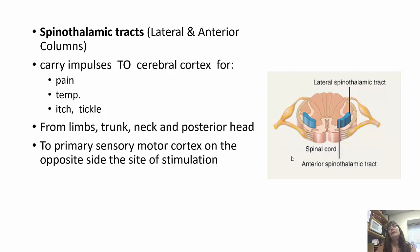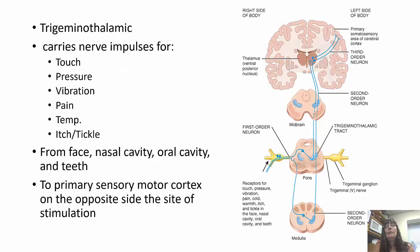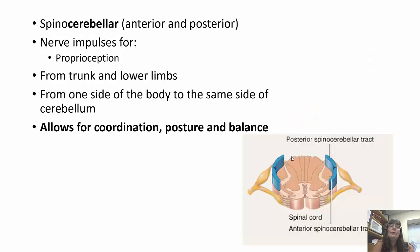Remember: left side controls right, right controls left, because they cross over. The trigeminothalamic tract carries impulses for vibration, tickle, itch, pain, touch, and pressure from the face, nasal cavity, oral cavity, and teeth to the primary somatosensory cortex on the opposite side. The spinocerebellar tract carries impulses for proprioception from the trunk and lower limbs to the same side of the cerebellum, allowing us to have balance, maintain posture, and be coordinated.